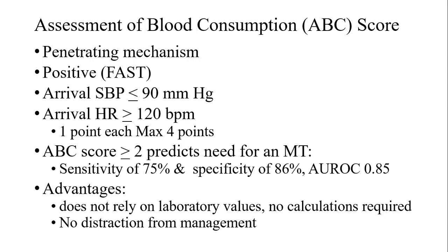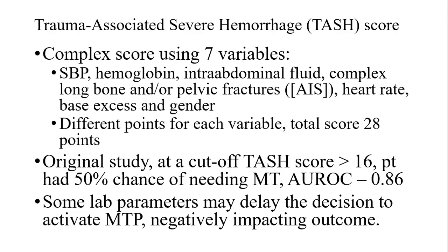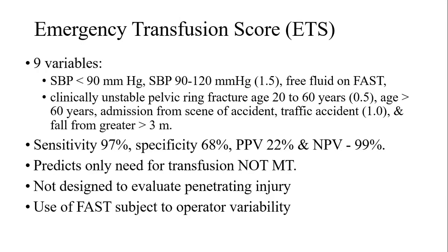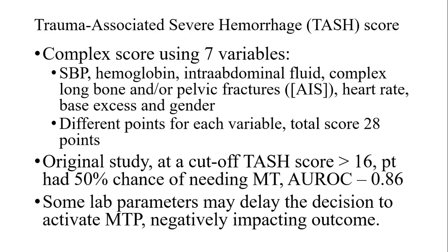The ABC score can be done fastest — it has only 4 criteria, and the only subjective element is the FAST or E-FAST. The maximum is 4 points, and a score of more than 2 gives an area under the curve of 0.85 for prediction of massive transfusion. It is useful because it does not rely on lab evidence and no calculations are required. The TAS score has 7 variables including hemoglobin; at a cut-off of more than 60, patients had a 50% chance of needing massive transfusion, with an AUC of 0.86. Anything above 0.8 is reasonable, but lab parameters make it less practical.